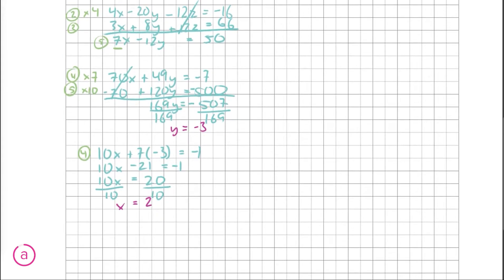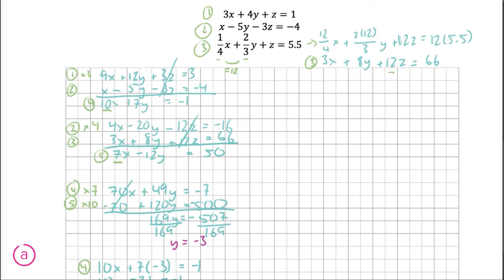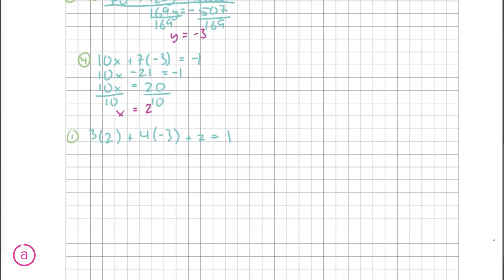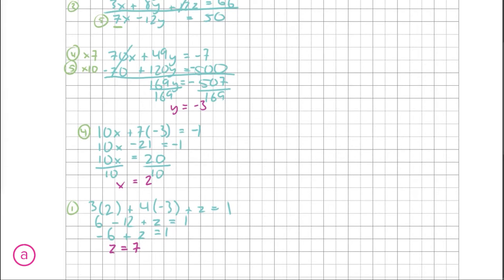Now all we need to do is find z. We choose one of our original equations — equation one, because the coefficient of z is just one — and substitute back in the answers we have for x and y. We multiply everything out and get the answer: z is equal to seven. And there we go — we've solved the equation for all three variables.